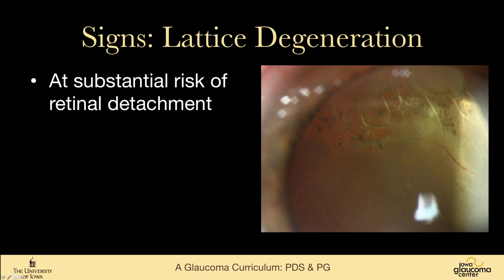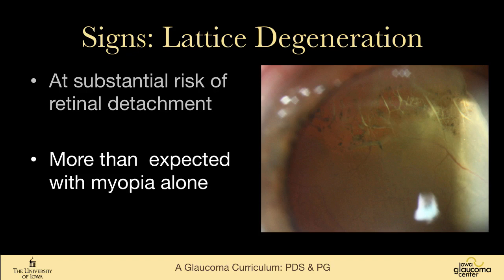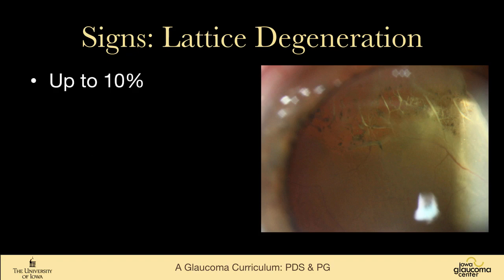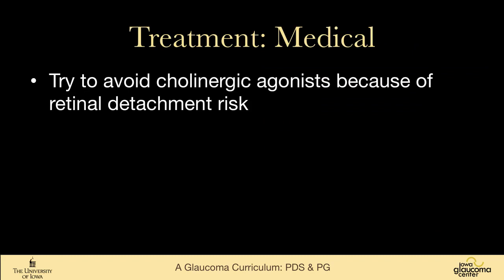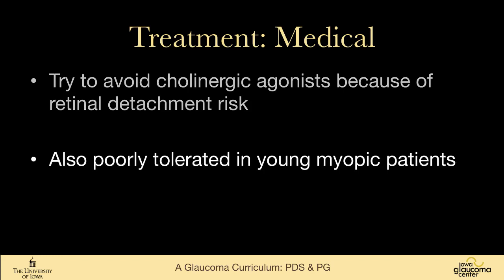This is a picture of lattice degeneration of the retina. These patients are at substantial risk for retinal detachment — much more than you would expect just from their myopia. Studies have shown six to ten percent of individuals with pigment dispersion syndrome will develop retinal detachment, so it's really important to discuss the signs and symptoms with them. For treatment, we use the same medical treatments as for open-angle glaucoma. We don't use cholinergics much anymore, and this would be a particularly bad population for them given the retinal detachment risk, and they're poorly tolerated in young myopic patients.